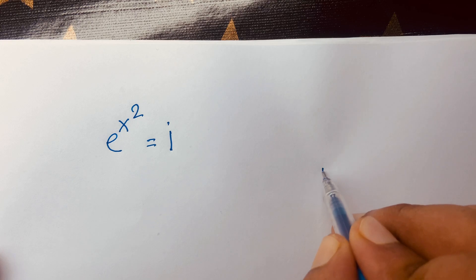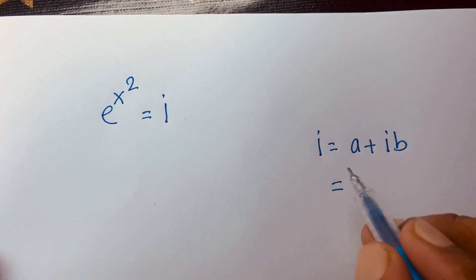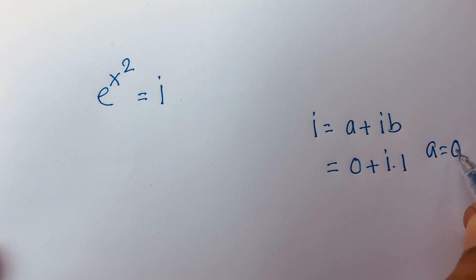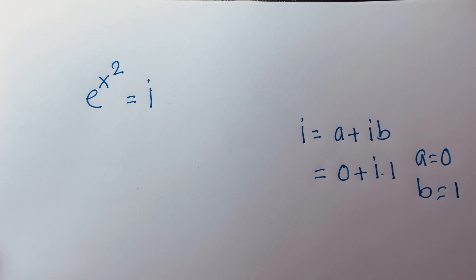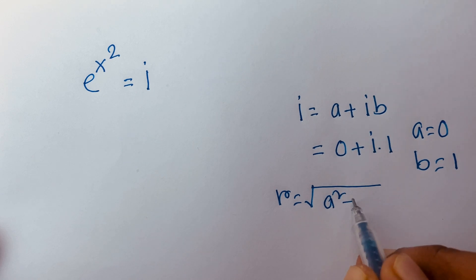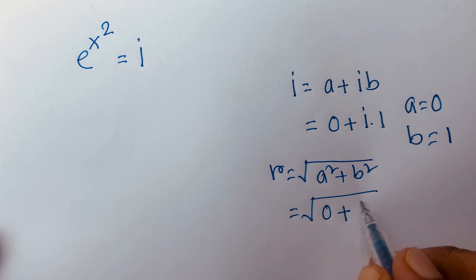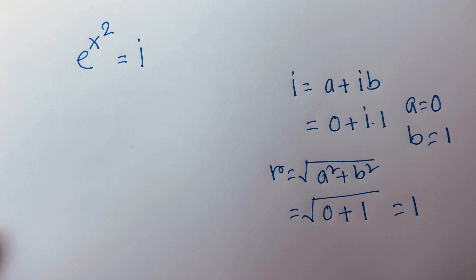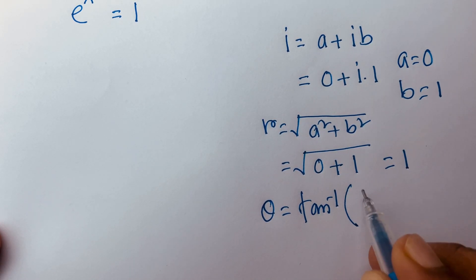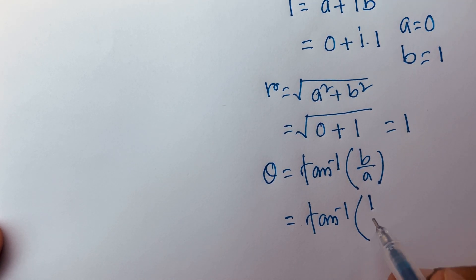First of all, here is i. I can say i it will be a plus i·b, then i can say this i it will be zero plus i times one. If I compare, I can see a is equal to zero and b is equal to one. Then I can say r is equal to square root of a squared plus b squared. We know that a is equal to zero, so it will be square root of zero plus b squared; one squared will be one, so r is equal to one.